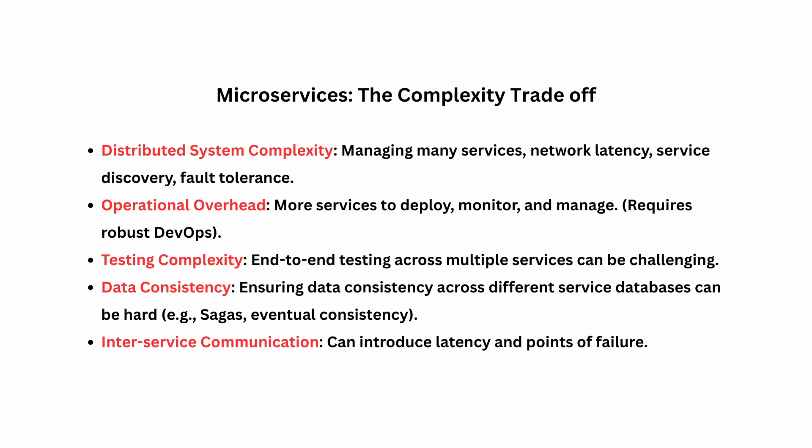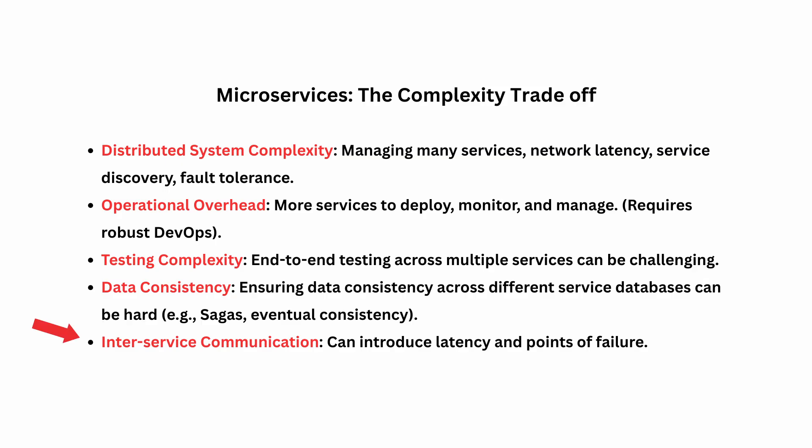Nothing is perfect — everything comes with trade-offs, and microservices have some too. First, they introduce distributed system complexity: multiple moving parts need to find and talk to each other over a network, which means worrying about network latency, service discovery, and how services behave when others fail. There is also significant operational overhead — instead of one application, you now have many services to deploy, monitor, log, and secure, so good DevOps teams are essential. Testing becomes more complex — testing a user journey that spans multiple services end-to-end is much harder. There's also data consistency to manage across different databases since each service may have its own. And communication between services can add latency and become a new point of failure.